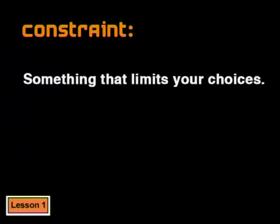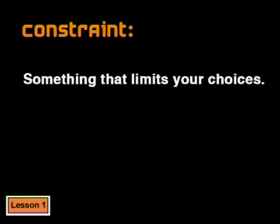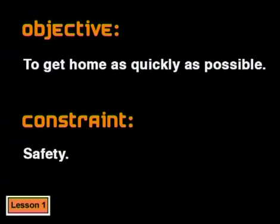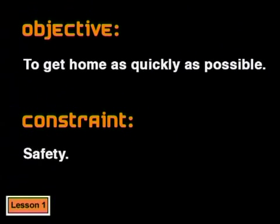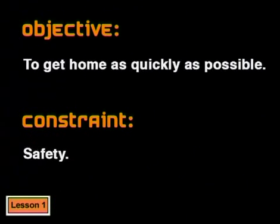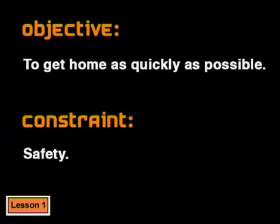Keeping safe in this situation is a constraint or restriction. A constraint is something that limits your choice. In this case, the issue of safety limits how fast Vanessa and Nick can get home. We can phrase the problem more formally: Vanessa and Nick want to achieve the objective of getting home as quickly as possible, subject to the constraint of safety.